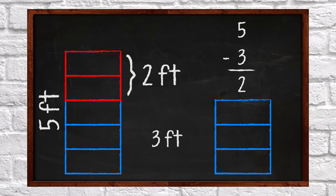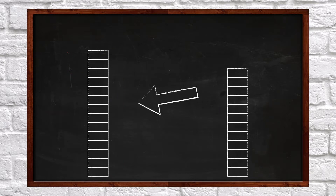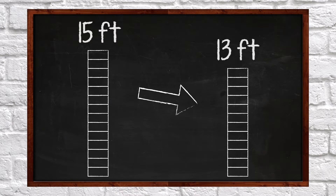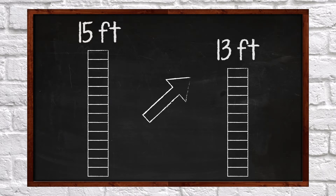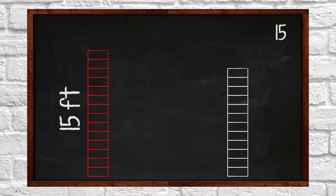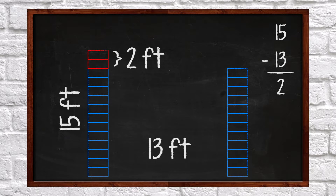Here is another example of using subtraction to compare two things. This wall is fifteen feet tall and this wall is thirteen feet tall. How much bigger is this wall compared to this wall? We can subtract to find the answer. Fifteen minus thirteen equals two.